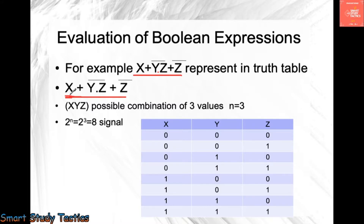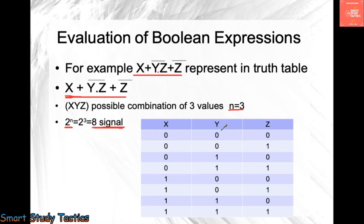Now we have three possible combinations: x, y, and z — so n equals 3. We use the formula 2 to the power n, which is 2 to the power 3, that equals 8. So this table will generate 8 rows. It is very important to know how to draw this table. We have eight rows, and we start with columns x, y, and z.